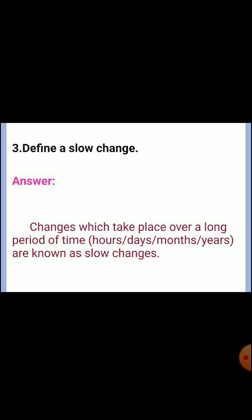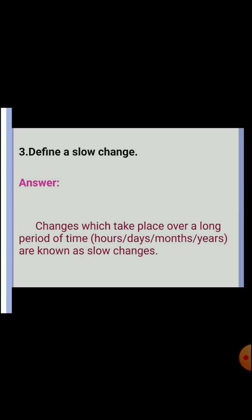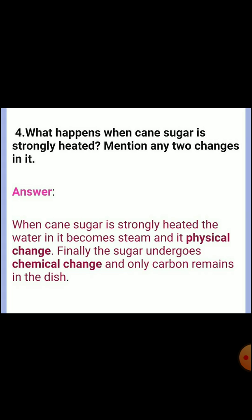Next, third one: define a slow change. Answer: changes which take place over a long period of time — over days, months, or years — are known as slow changes. Fourth one: what happens when cane sugar is strongly heated? When cane sugar is strongly heated, the water in it becomes steam and heat — a physical change. Finally, the sugar undergoes a chemical change and only carbon remains. So the two changes are: physical change and chemical change.